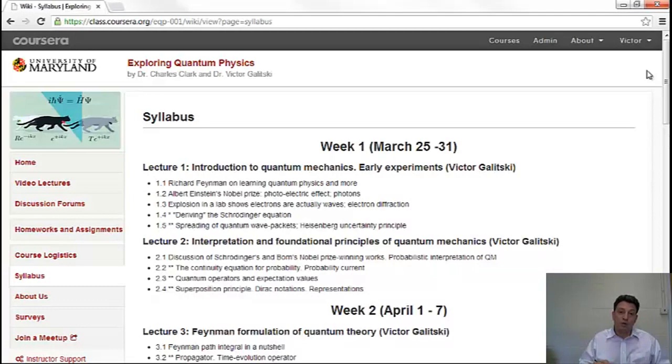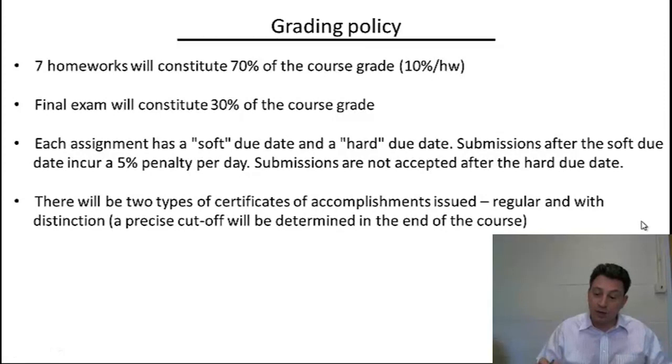Finally, let me talk about the grading policy. So I assume that it might be of interest to many of you who would like to get a certificate of accomplishment. So the grading is gonna be based entirely on your homeworks. There will be seven homeworks for each week, and at the end of the week there will be a homework. And these seven homeworks are going to contribute 70% to your course grade. And finally in the last week there will be a final exam which essentially is a long homework which will cover all the topics we will have studied by the time, and the final exam will constitute 30% of the course grade. So each assignment will have a soft due date where you will get the full credit for whatever you have done by that time and a hard due date after which no submissions will be accepted.